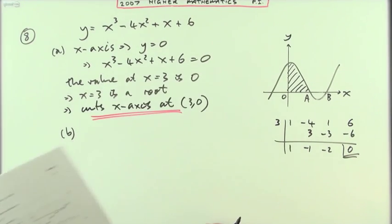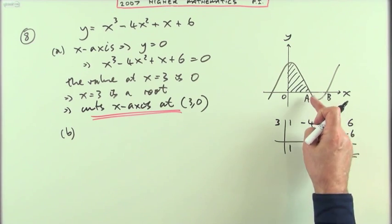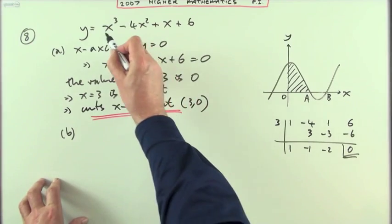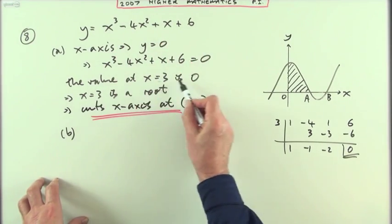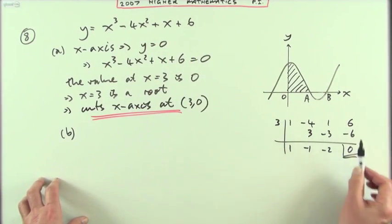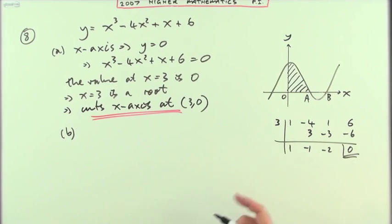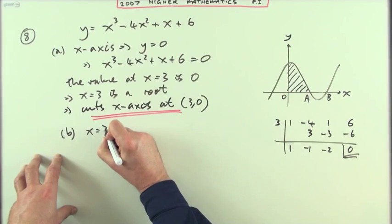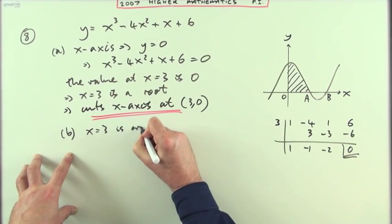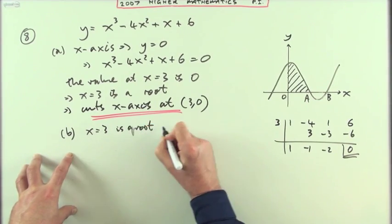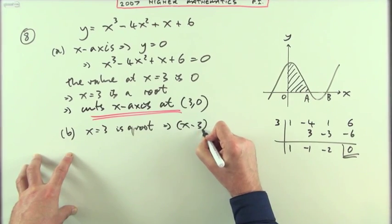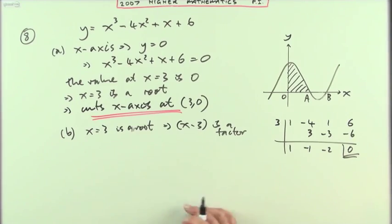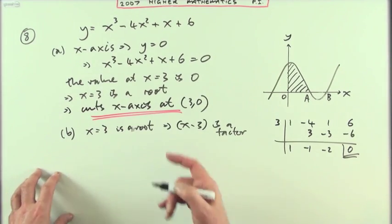Part b: Hence or otherwise find the coordinates of A. It's going to be the hence way since I did this. If I'd simply substituted three into that to arrive at the value of zero, I'd have to start again, but I've already done the work. So from here I can state straight away: x equals 3 as a root means x minus 3 is a factor.